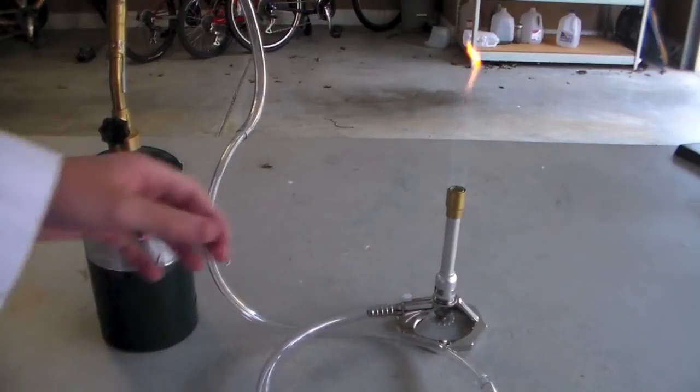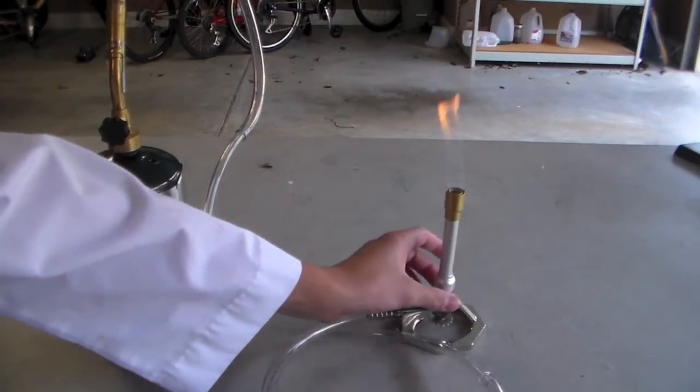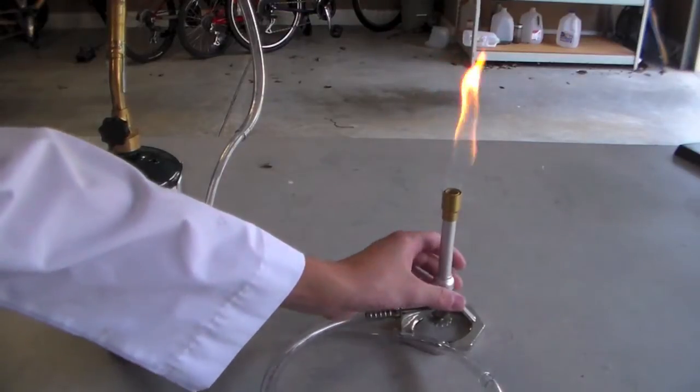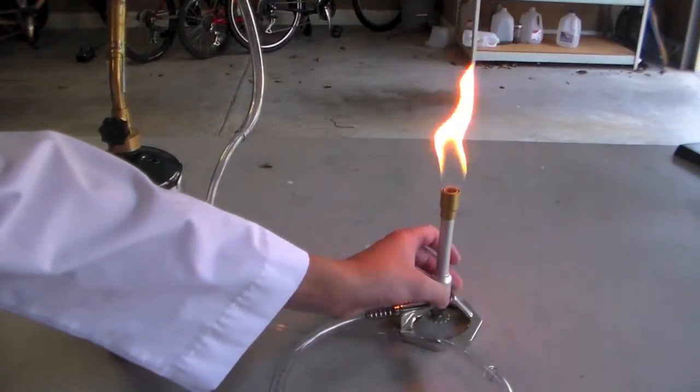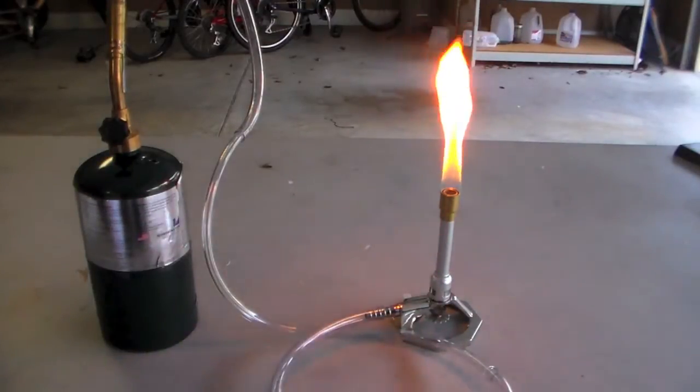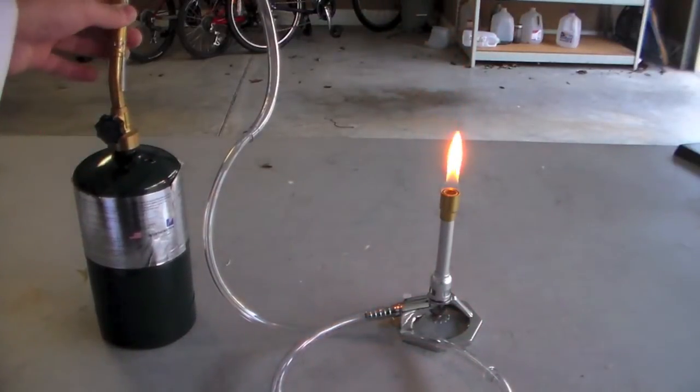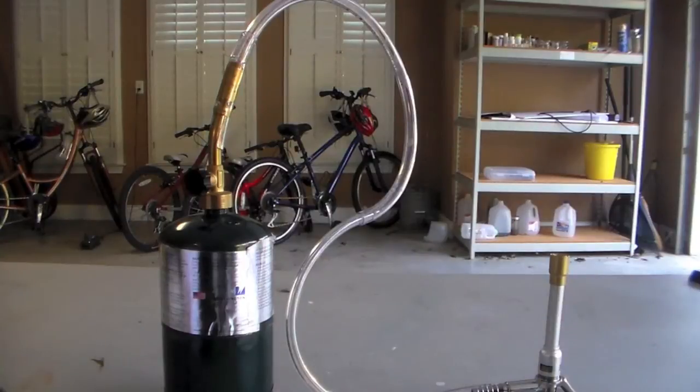Finally, to turn off the burner, what you want to do is first adjust the oxygen on the burner until you get a yellow flame. The yellow flame is the cooler flame—it's still pretty hot obviously, but it's cooler. And then you want to turn the gas off at the torch.